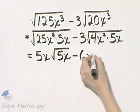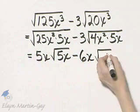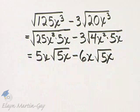Square root of x squared is x, and then I have 5x left under the radical.